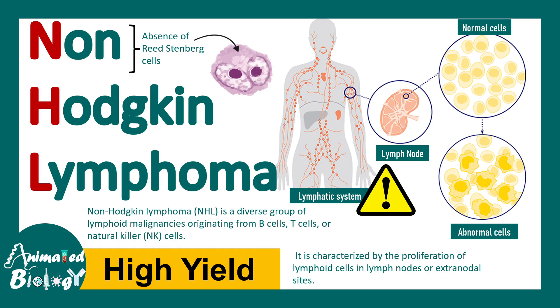The non-Hodgkin part suggests the absence of Reed-Steinberg cells, which are otherwise present in Hodgkin lymphomas. So this is a distinguishing criteria.